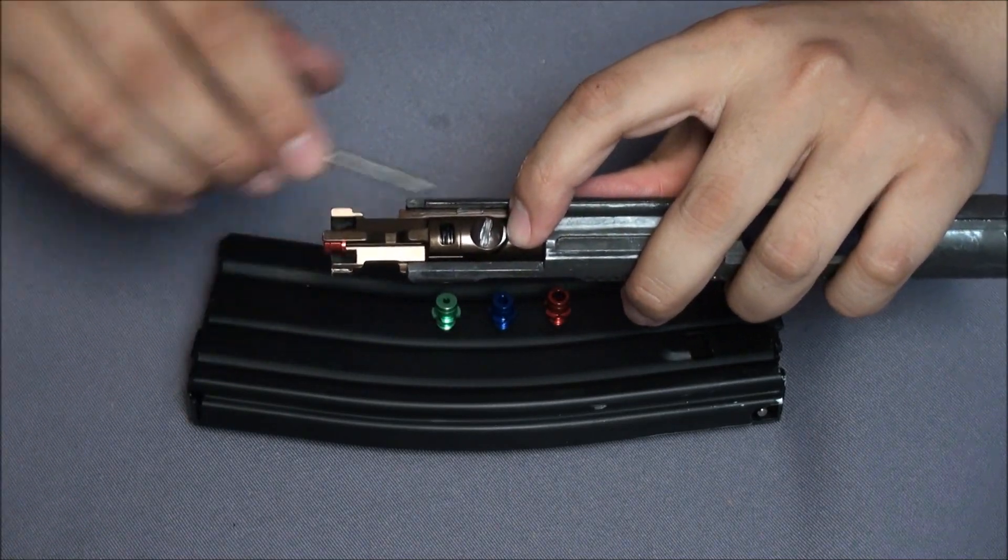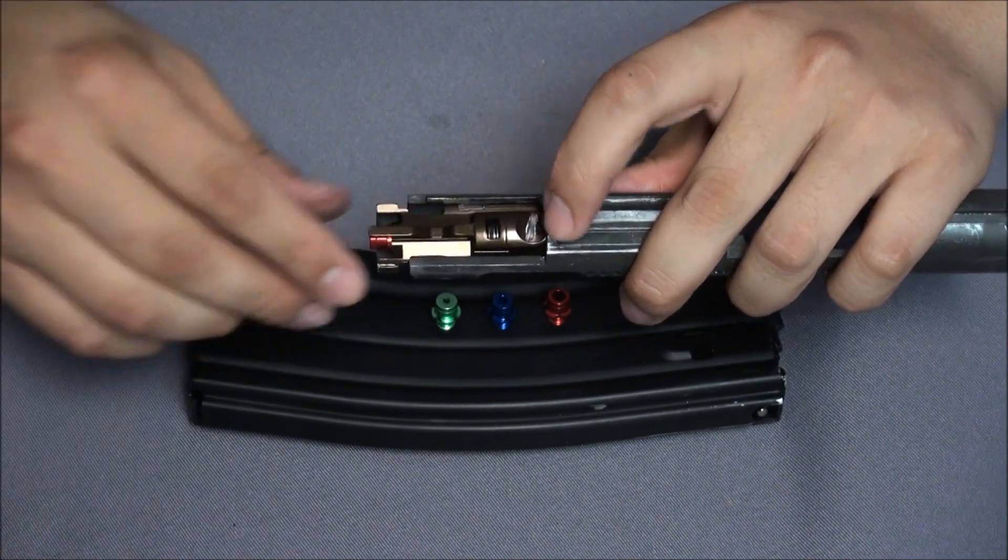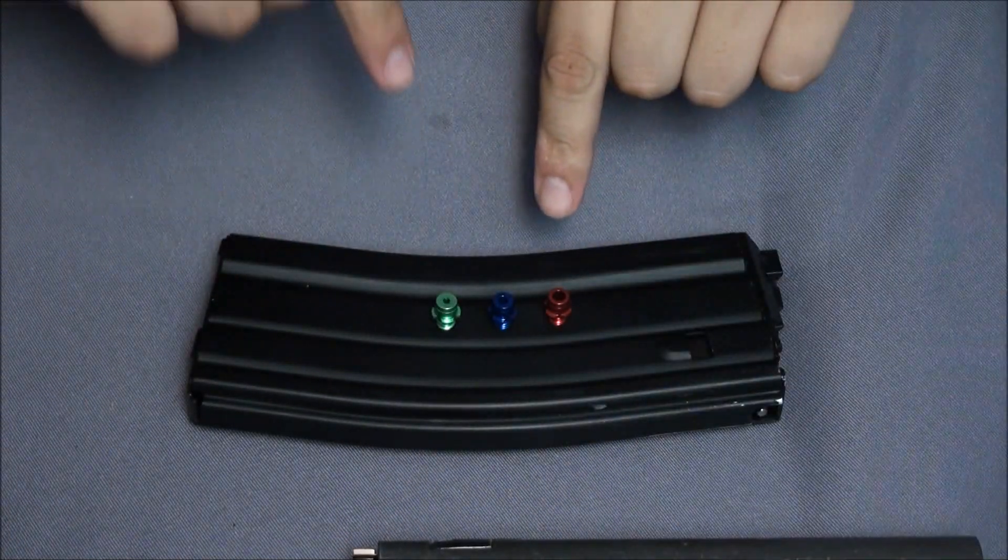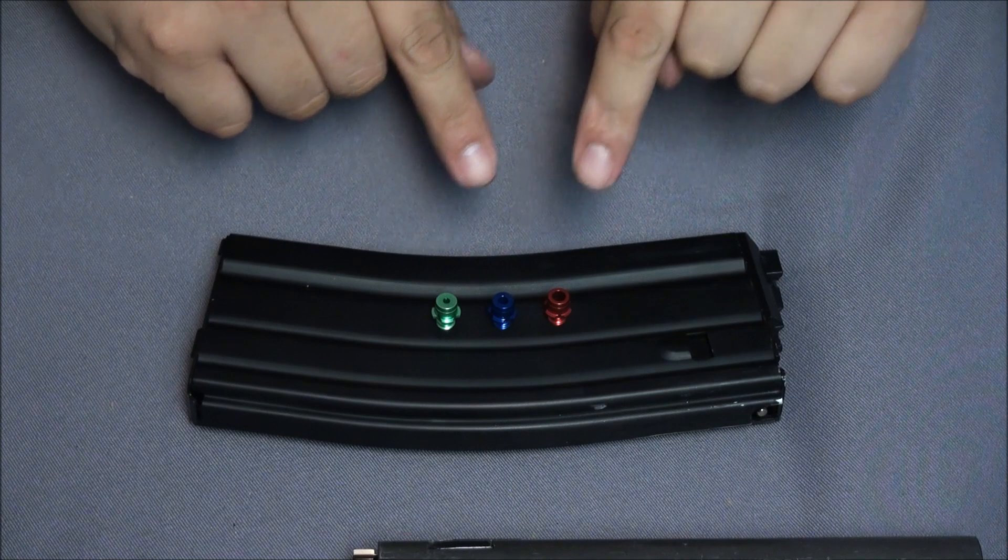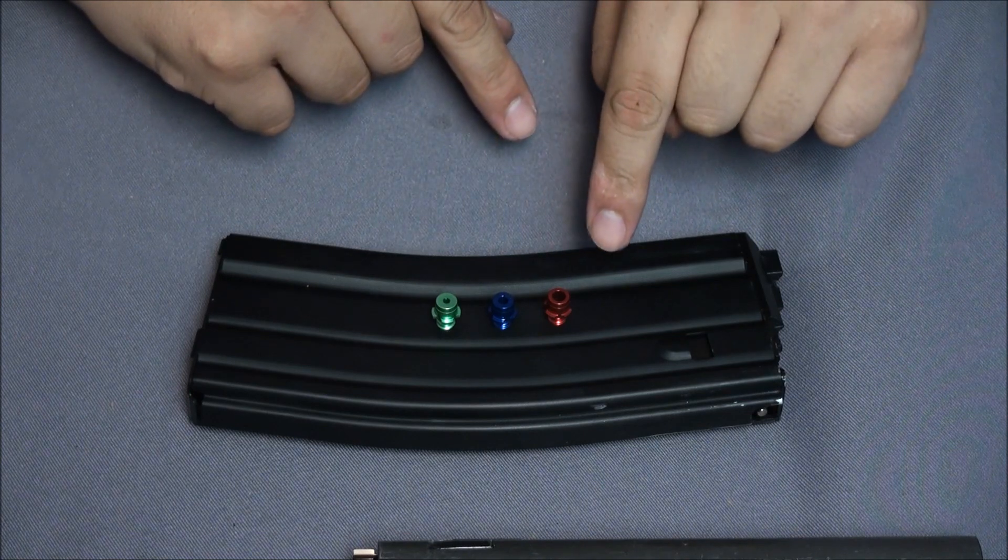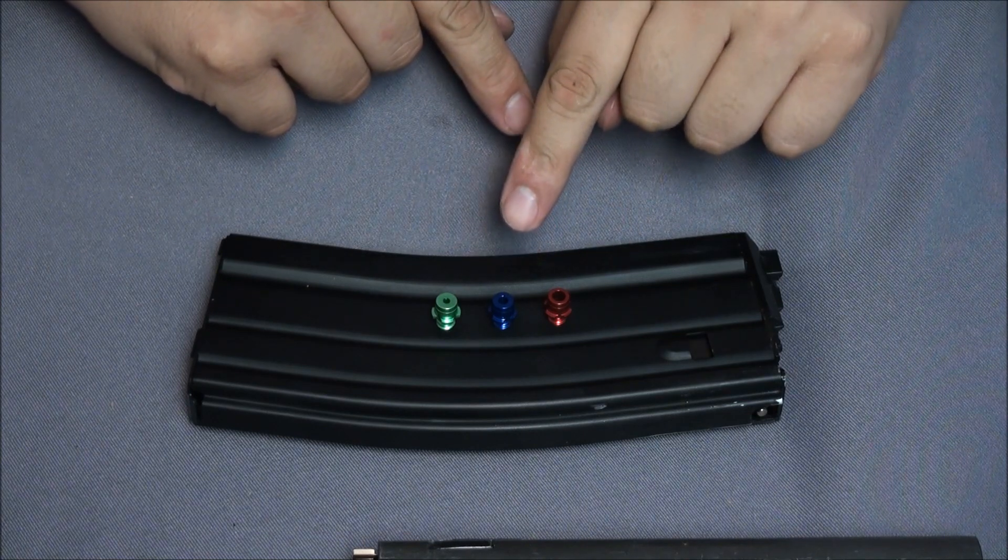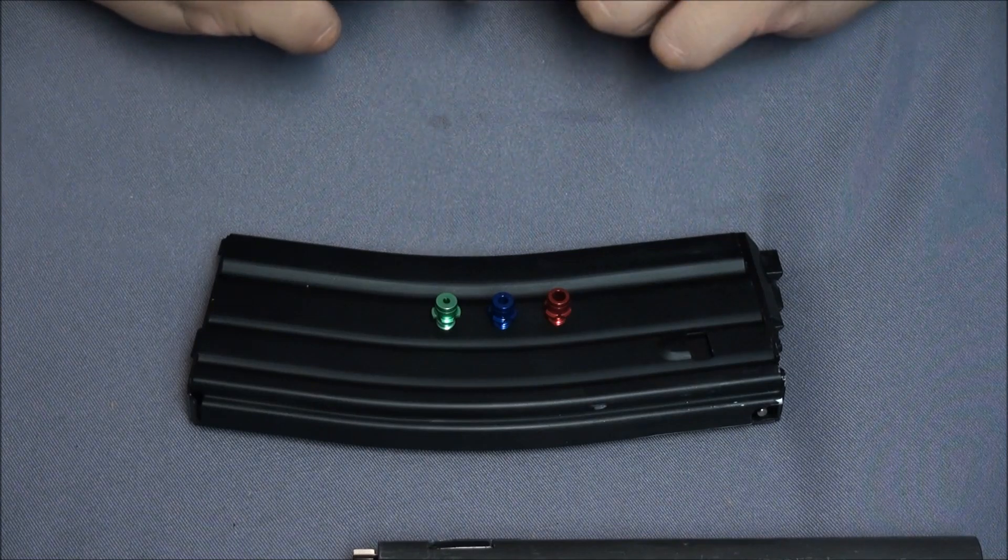We come with three different types of nozzle head: the red one means high FPS, the blue one means medium FPS, and the green one means low FPS. In this video we will show you how to adjust your FPS and demonstrate the process.